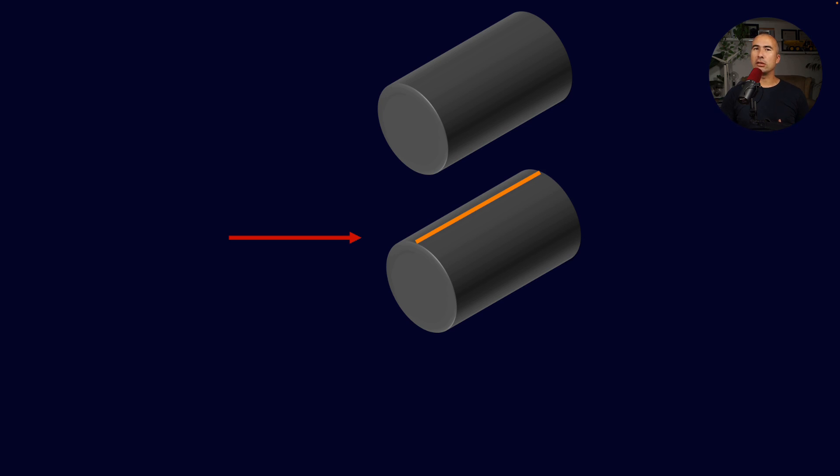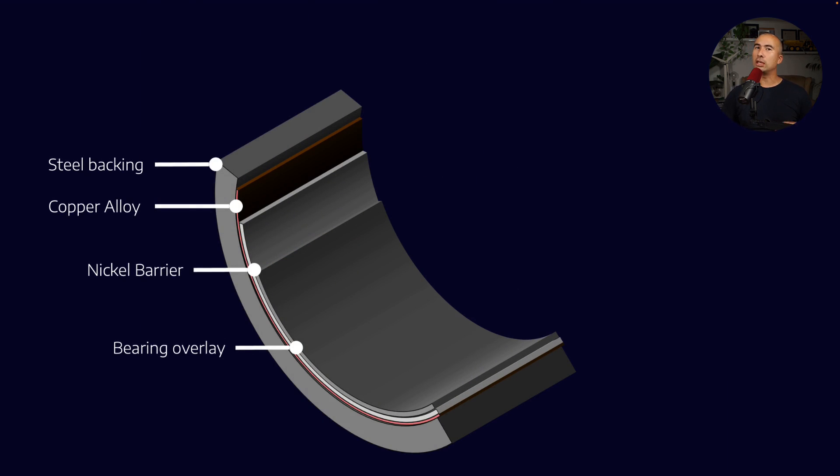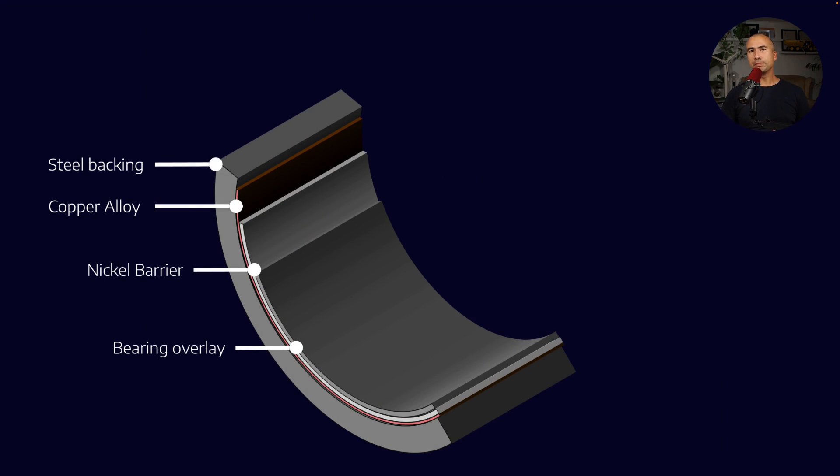We see this a lot in things like plain bearings, for example, where actually the contact surface is a little bit bigger, right?